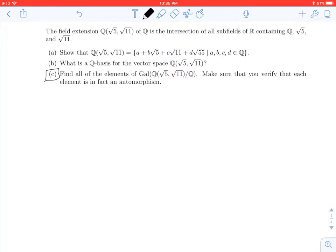So, we've already established that a Q basis for Q adjoin square root of 5 and square root of 11 is given by 1, root 5, root 11, and root 55, which is just root 5 times root 11.